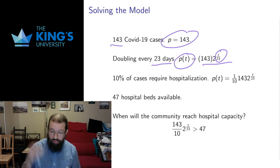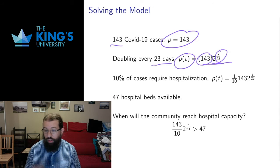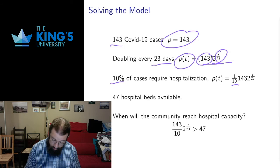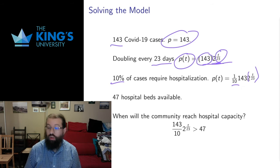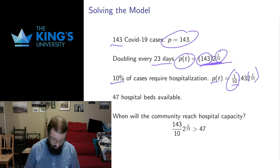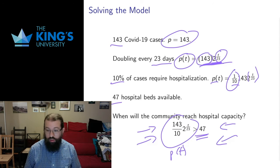Basically, every time the number of days increases by 23, this multiplies 143 by 2. So after 23 days, multiply by 2 and we get 286, then multiply by 2 again every period of 23 days. However, we only care about 10% of those cases. 10% is one tenth, so we get one tenth times 143 times 2 to the T over 23. I only need to calculate one tenth of this total — that's a new function telling me the number hospitalized. And there are 47 hospital beds available, so the thing I need to solve is when this P of T is actually going to be larger than 47.